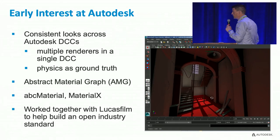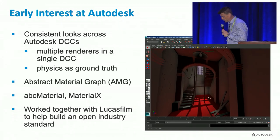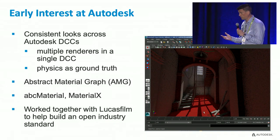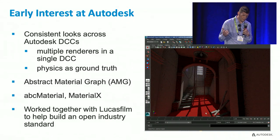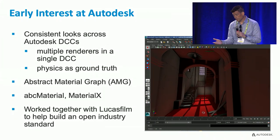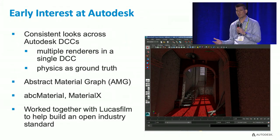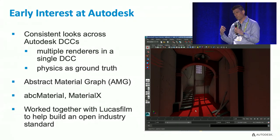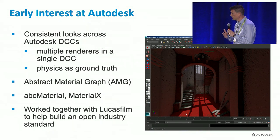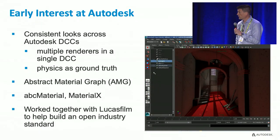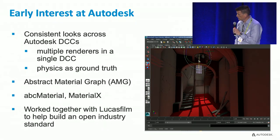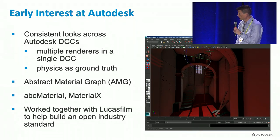At Autodesk we had similar problems — we have a bunch of different DCCs, and some of our DCCs have a bunch of different renderers. If you think of Maya at the time, it had Viewport 1, Viewport 2, and some offline renderers. We were looking at how to have consistent shading between all these different renderers. That was also around the time that artists were starting to wrap their heads around physically-based materials, and obviously the closer you get to physics, the closer you are to ground truth — you can be predictable, and it kind of makes sense.